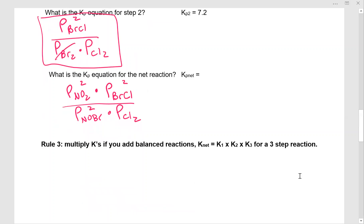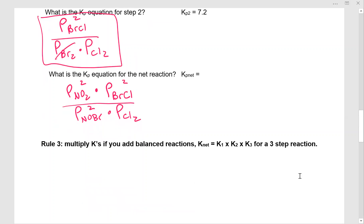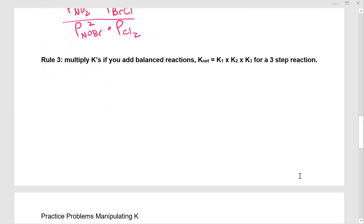So in summary, rule three, if you multiply K's, multiply K's if you add balanced equations. So K net is K1 times K2 times K3 if you had a three-step reaction.